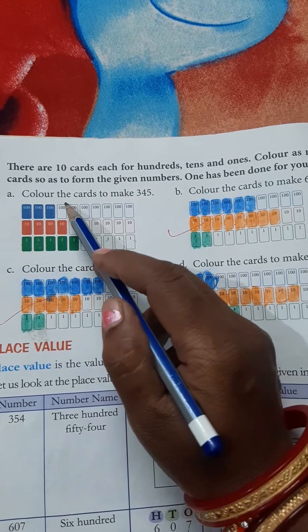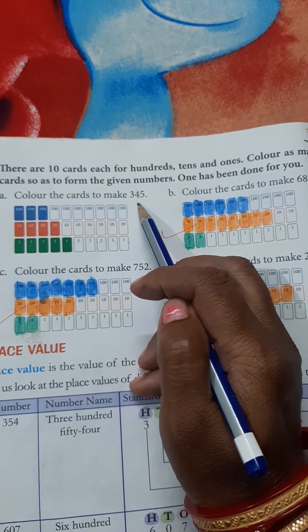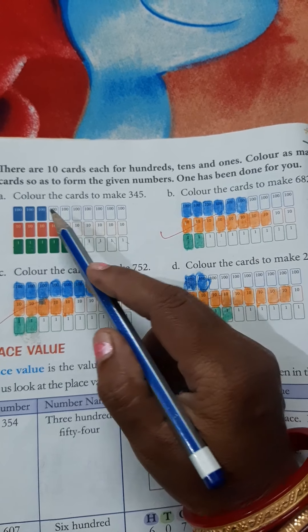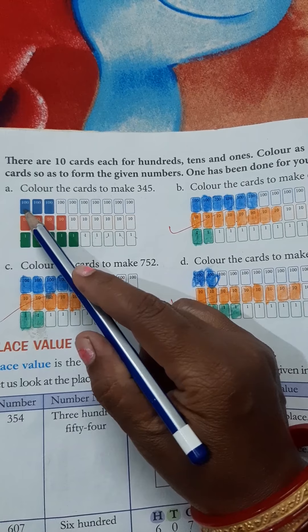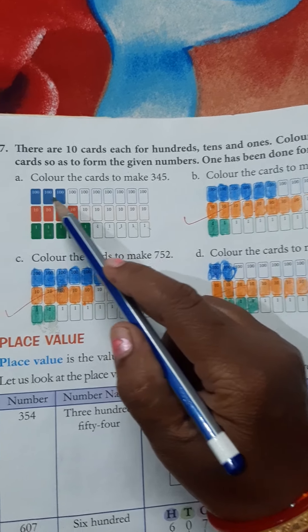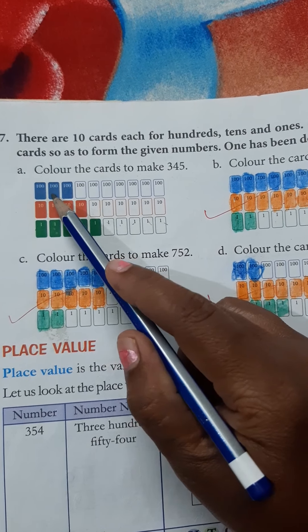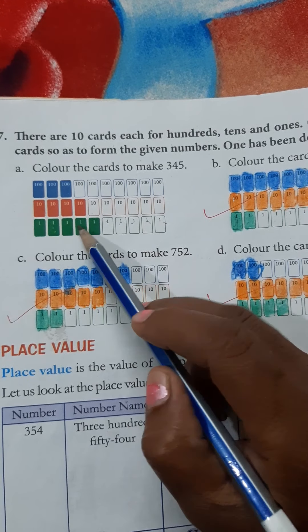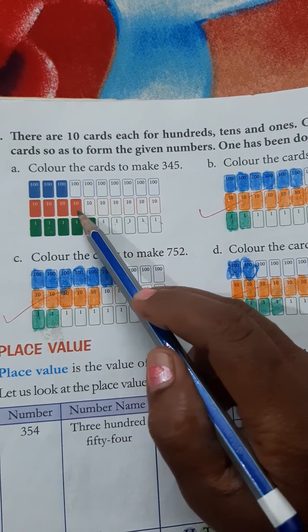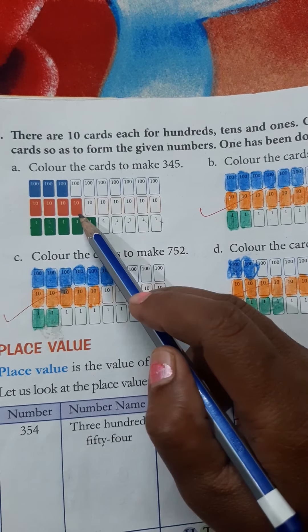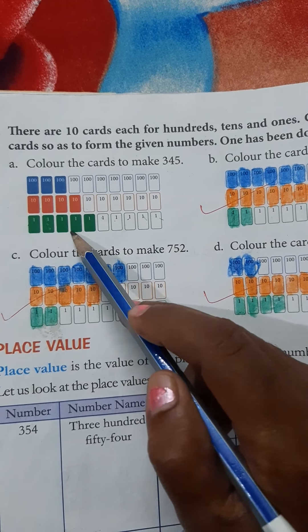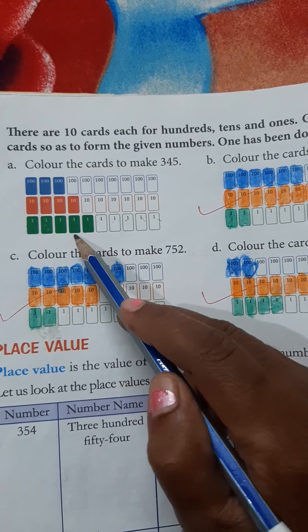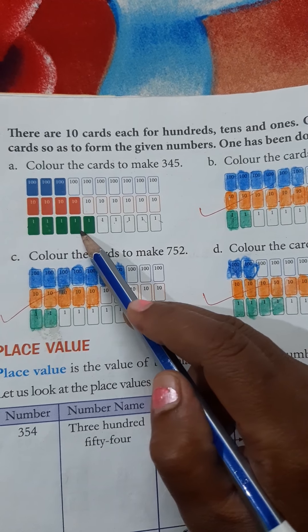Number 8, color the cards to make 345. Already, color with blue 3 cards. 3 cards means 300. 100, 200, 300. Then, 1, 2, 3, 4. 4 cards, color with red. Then, 1, 2, 3, 4, 5. 5 cards, color with green. It is already made.